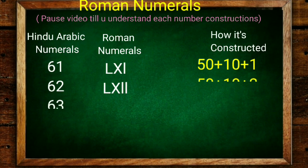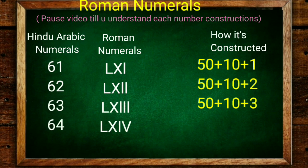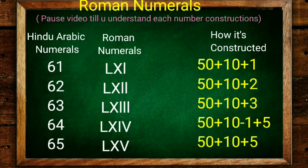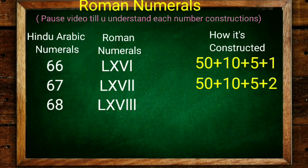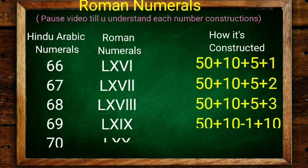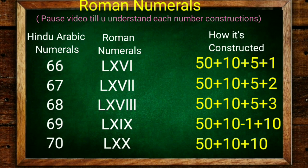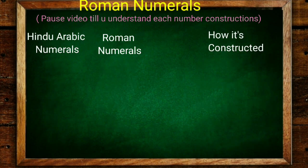61 is 50 plus 10 plus 1, 62, 63, 64. 50 plus 10 is 60 minus 1 is 59 plus 5 is 64, and 60 plus 5 is 65. 66, 67, 68. Important is 69: 50 plus 10 is 60 minus 1 is 59 plus 10, that is 69. And 70 is 50 plus 10 plus 10.